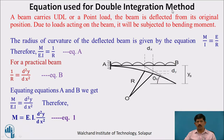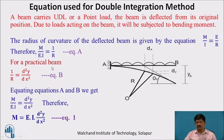The equations used for double integration method: when a beam is deflected in a curvature, it will have some centre O and radius R. The radius of curvature of the deflected beam is given by the flexure formula: M/I = E/R, therefore M/(EI) = 1/R (equation A). For a practical beam, 1/R = d²y/dx² (equation B). Equating A and B: M/(EI) = d²y/dx², therefore M = EI·d²y/dx². This is equation 1, used for the double integration method.